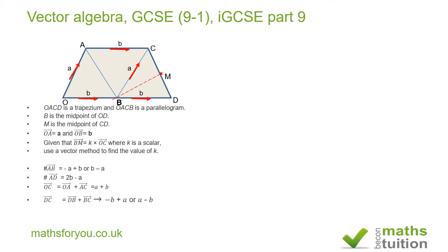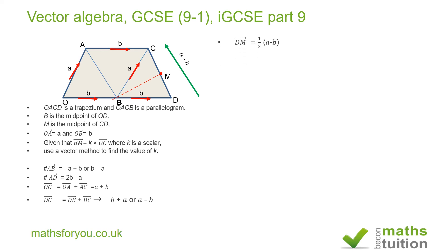Now I want to find DC, because I'll need DM next. To go from D to C, I go from D to B — that's minus b going against the grain — and then from B to C, which is plus a. So DC equals a minus b. Since M is the midpoint of DC, DM equals one half of a minus b.